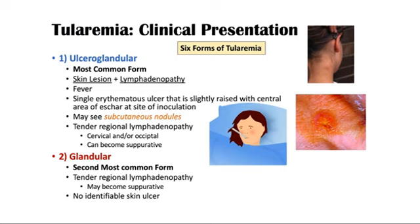There are 6 forms of tularemia. These forms represent the different clinical presentations of the disease. The 6 forms are: number 1, ulceroglandular; number 2, glandular; number 3, oculoglandular; number 4, pharyngeal; number 5, pneumonic; and number 6, typhoidal tularemia.